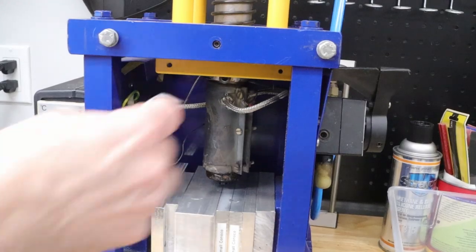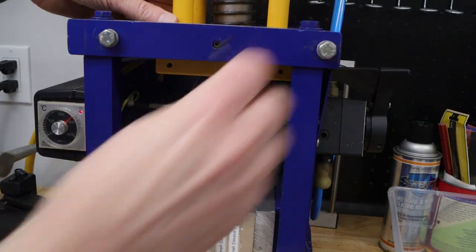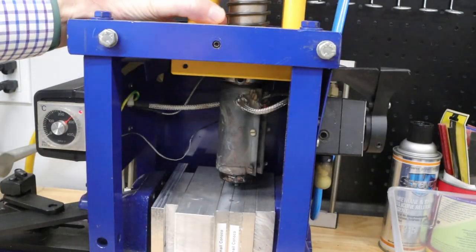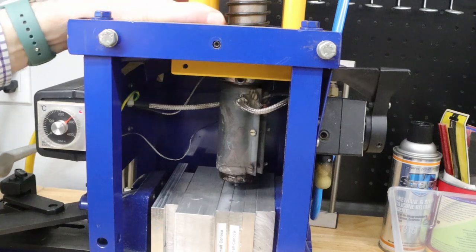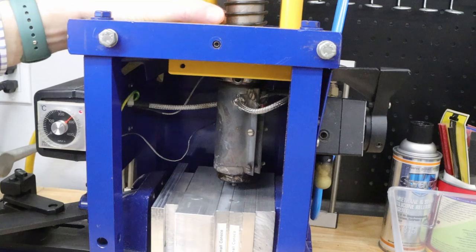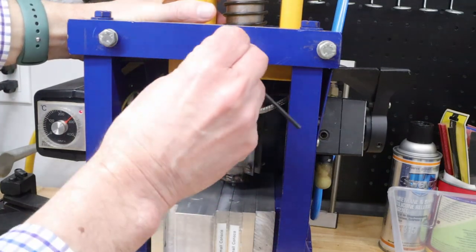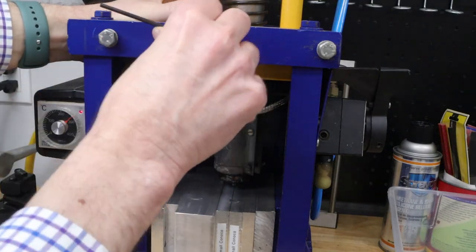To accommodate different mold geometries, there's a set screw here I can loosen, and then I can move the entire assembly, the injection assembly left and right, to get the nozzle centered over the hole in the mold. And then once I have it centered over the hole, I can go back and I can tighten the screw, and I'll be all set to inject.